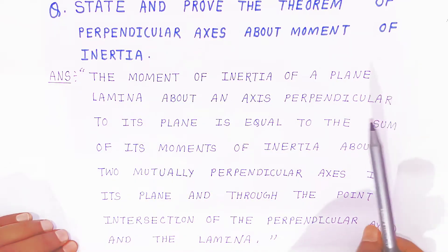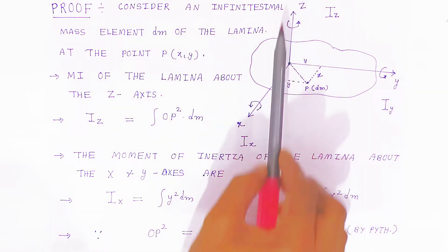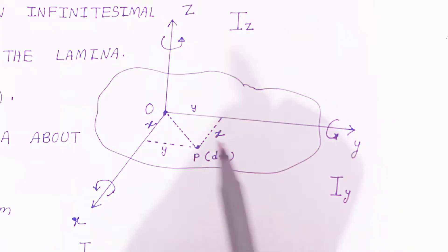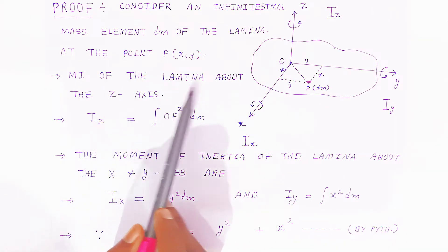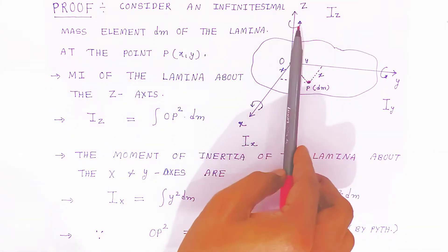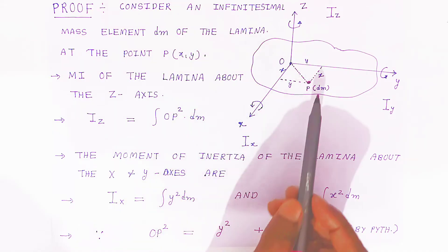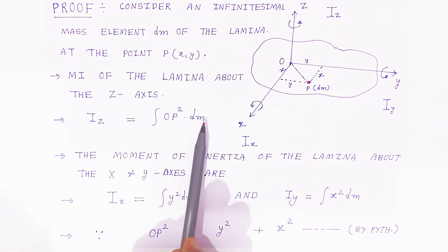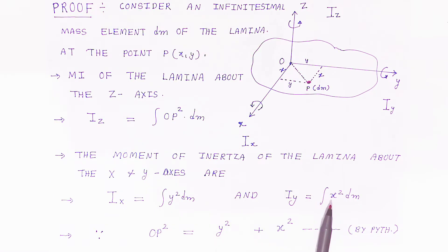Here we are talking about a plane lamina. The object is divided along X, Y, and Z axes. Consider an infinitesimally small element DM of the lamina at the point P with coordinates (x, y). The moment of inertia of the lamina about the Z axis is Iz equals integration of OP squared DM. The moment of inertia about the X and Y axes are given by Ix equals integration of y squared DM, and Iy equals integration of x squared DM.